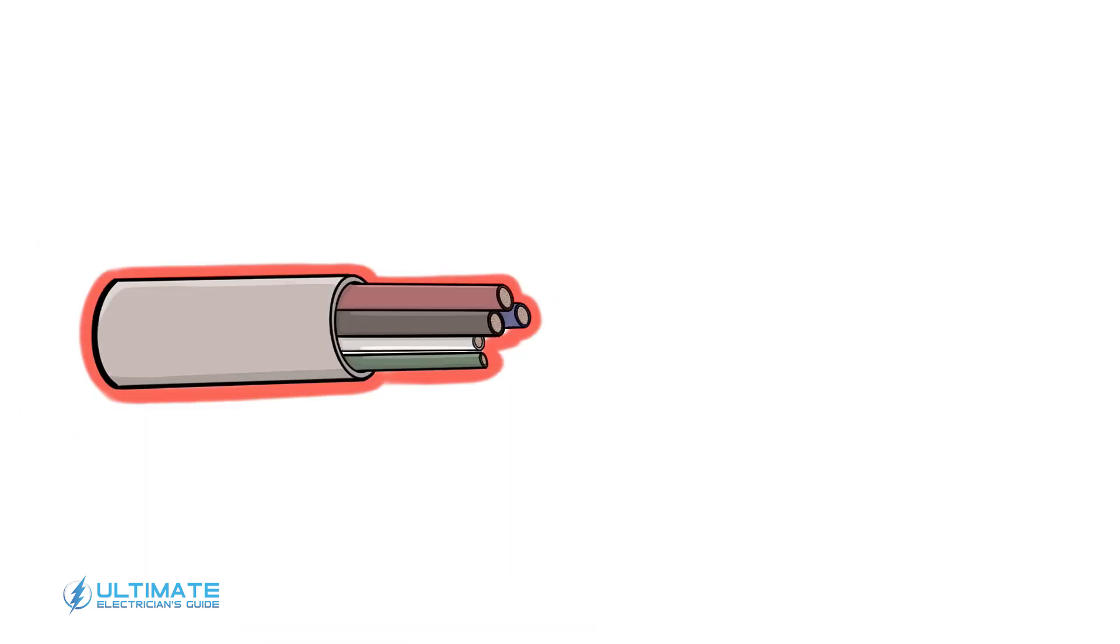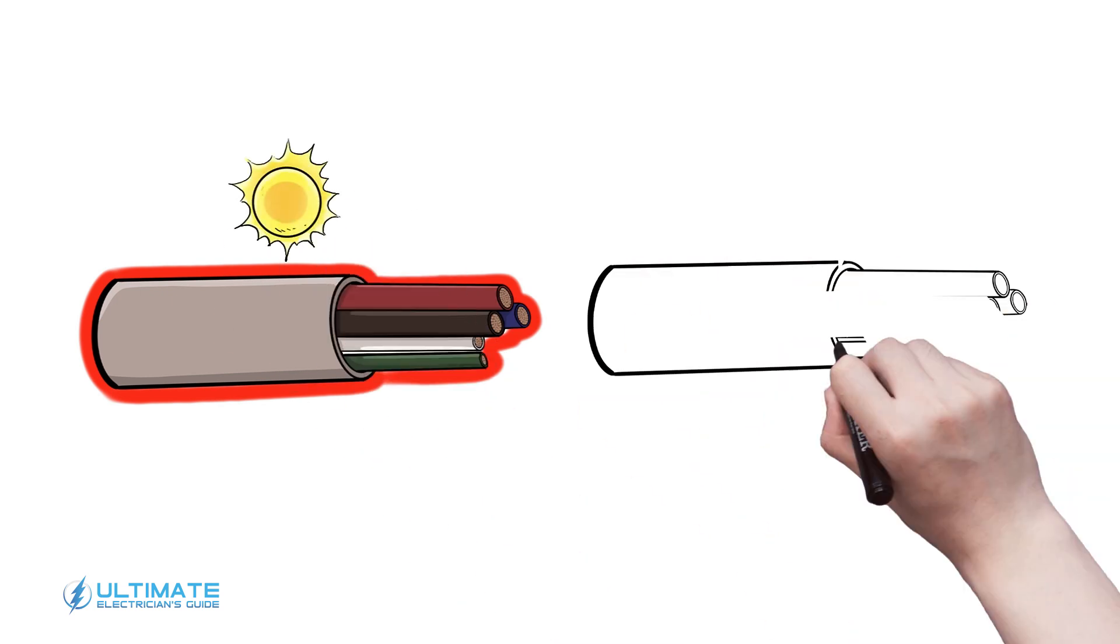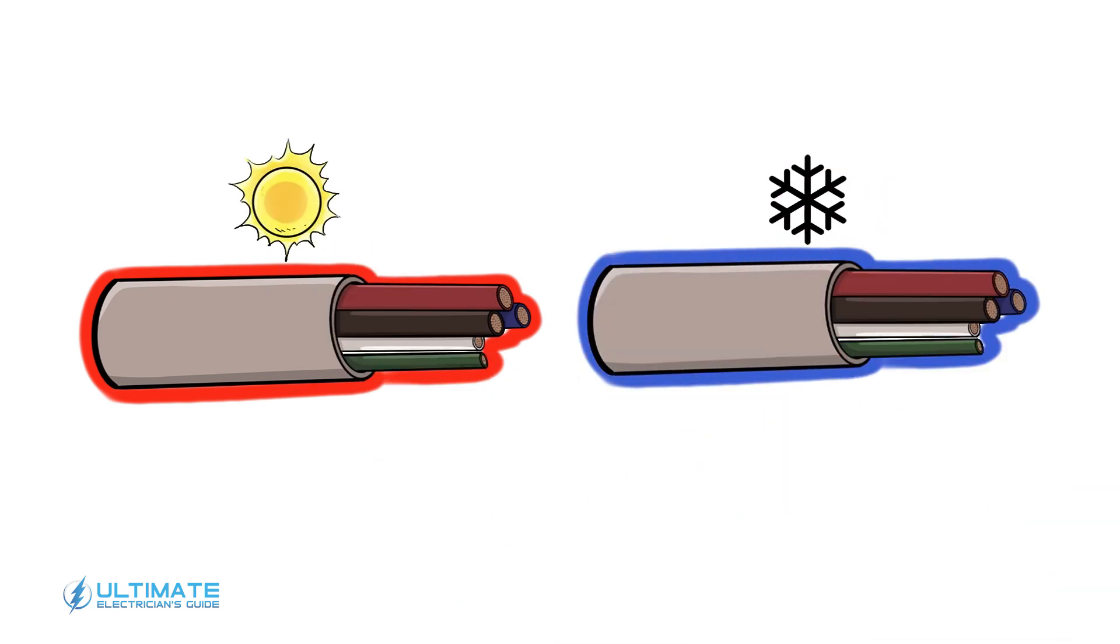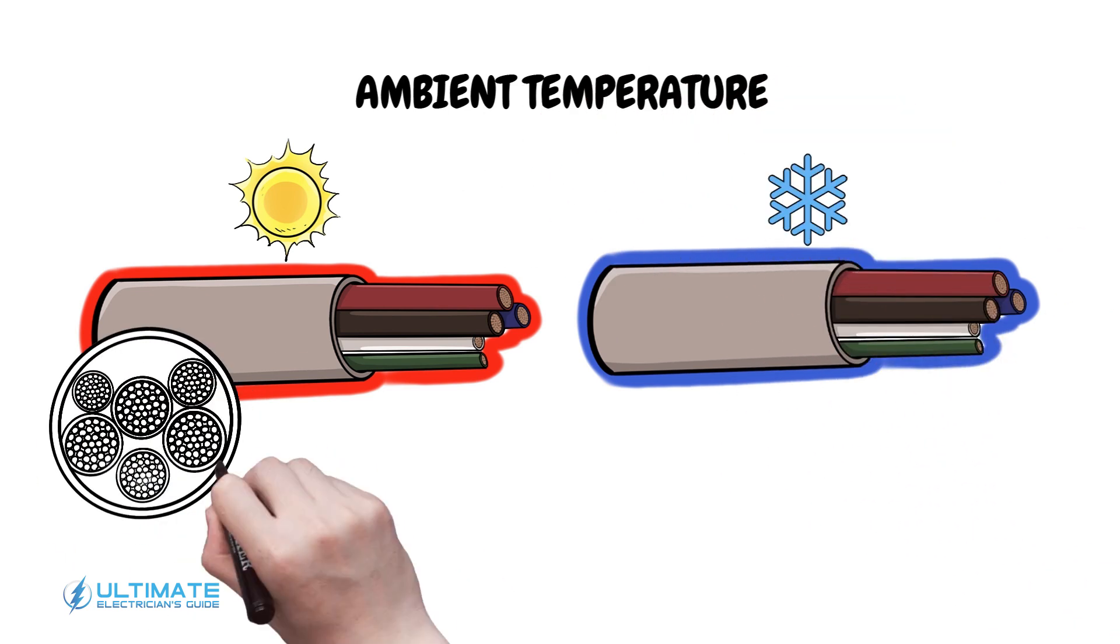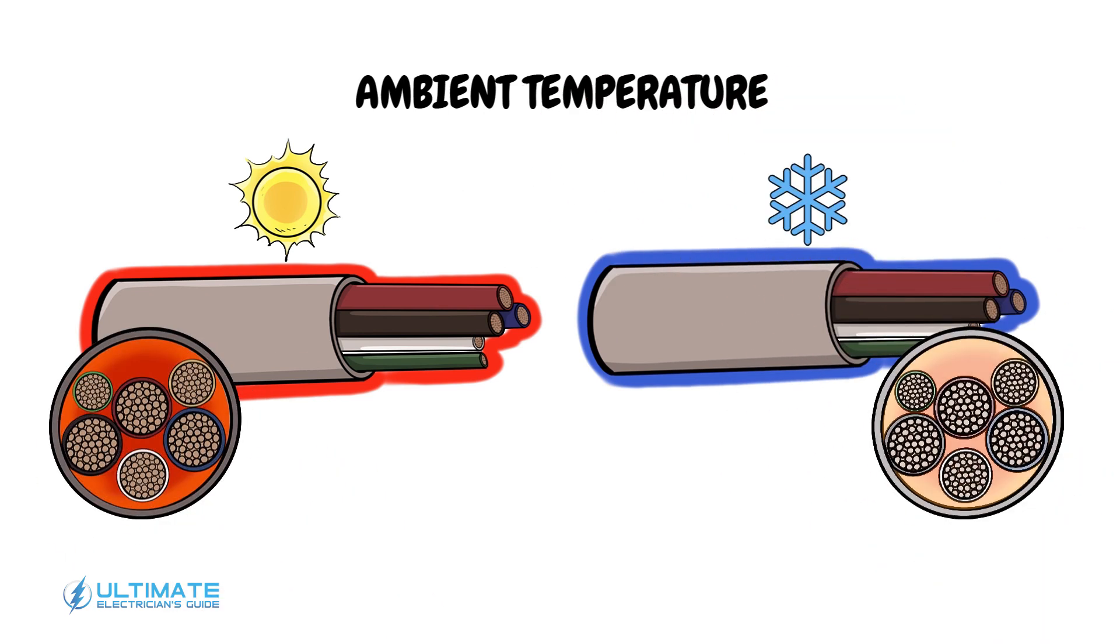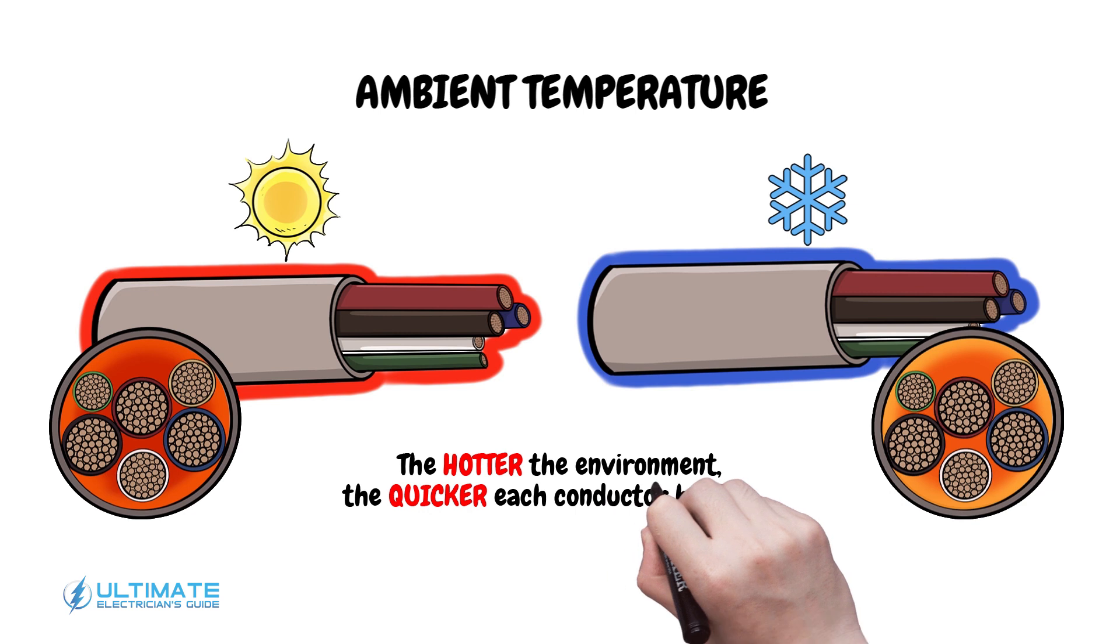There is another factor to consider here too. The temperature surrounding the conductors, or what the NEC refers to as the ambient temperature. The hotter the environment, the quicker each conductor heats up, yet again reducing the amount of amps allowed to flow through.